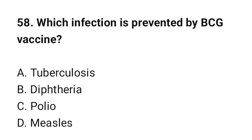Question number 58: Which infection is prevented by the BCG vaccine? The correct option is A: Tuberculosis.